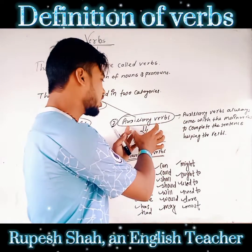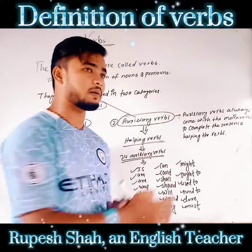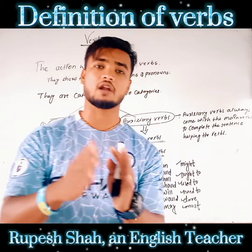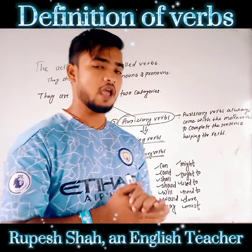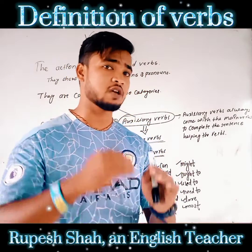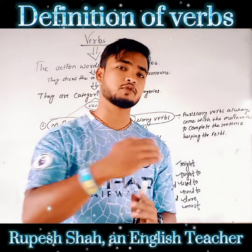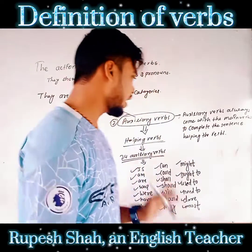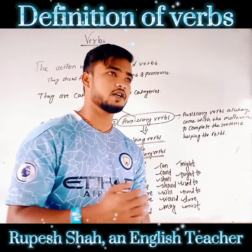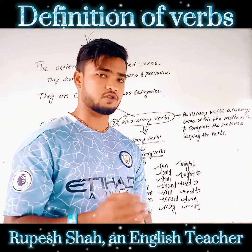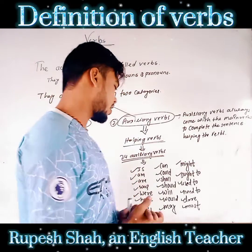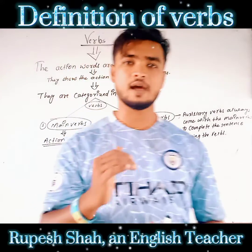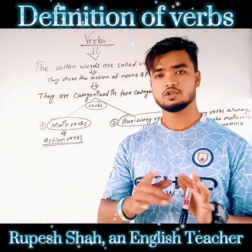Why are the auxiliary verbs known as the helping verbs? Auxiliary verbs are always known as the helping verbs because they help another verb to complete the sentences. According to English grammar, there are 24 auxiliary verbs: is, am, are, was, were, have, has, had, do, does...